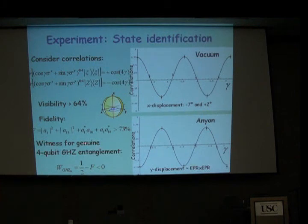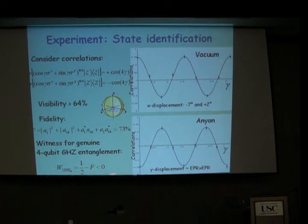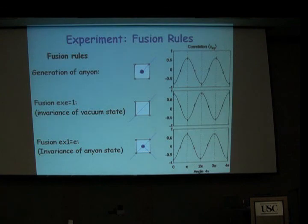There is a witness that can tell you if you actually have a component in a genuine four-qubit GHZ state — if you have entanglement of that type. This is simply 1/2 minus the fidelity. As long as the fidelity is above 50%, that means you do have a component in this state. So let's use these tools to identify the fusion rules.